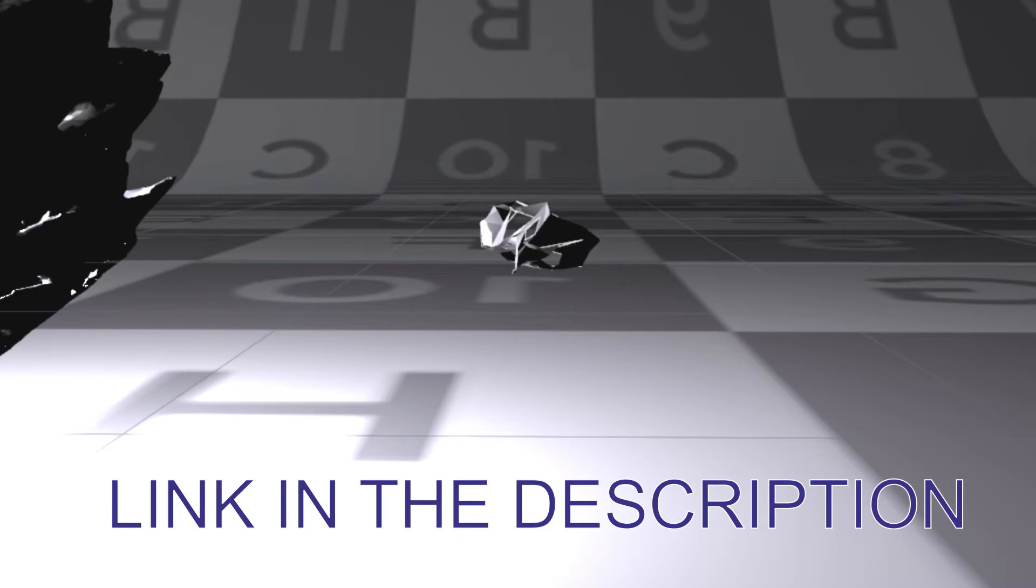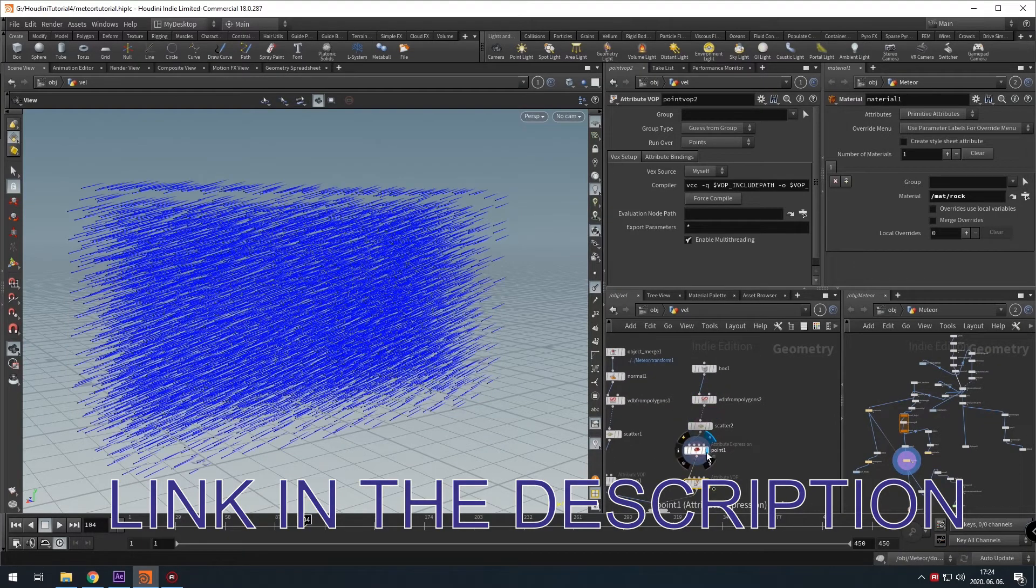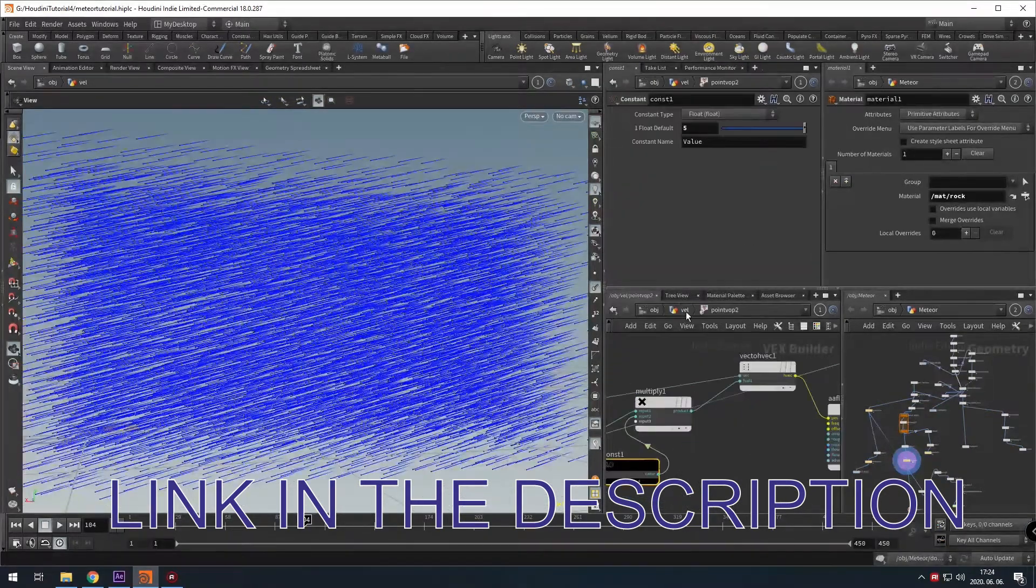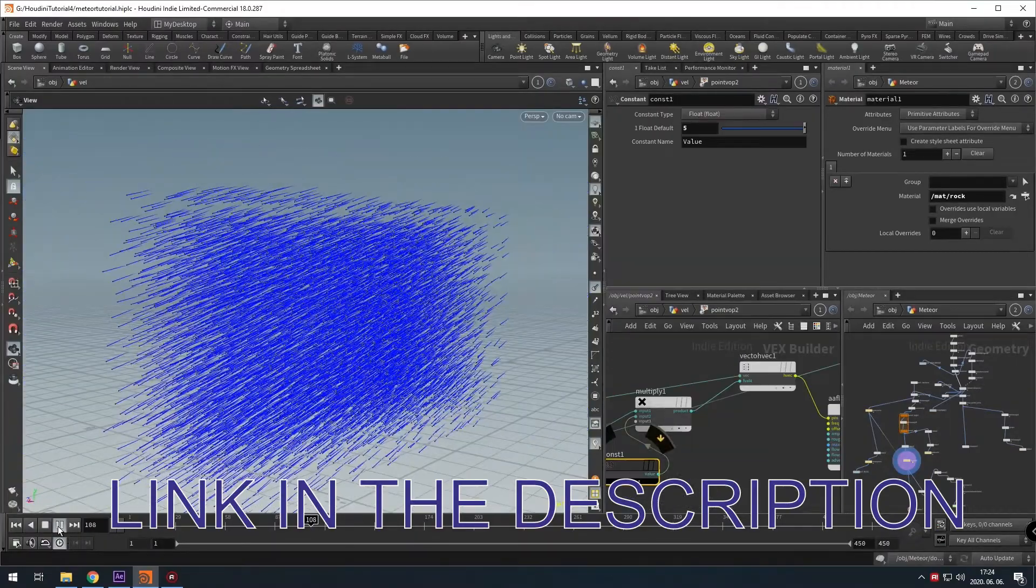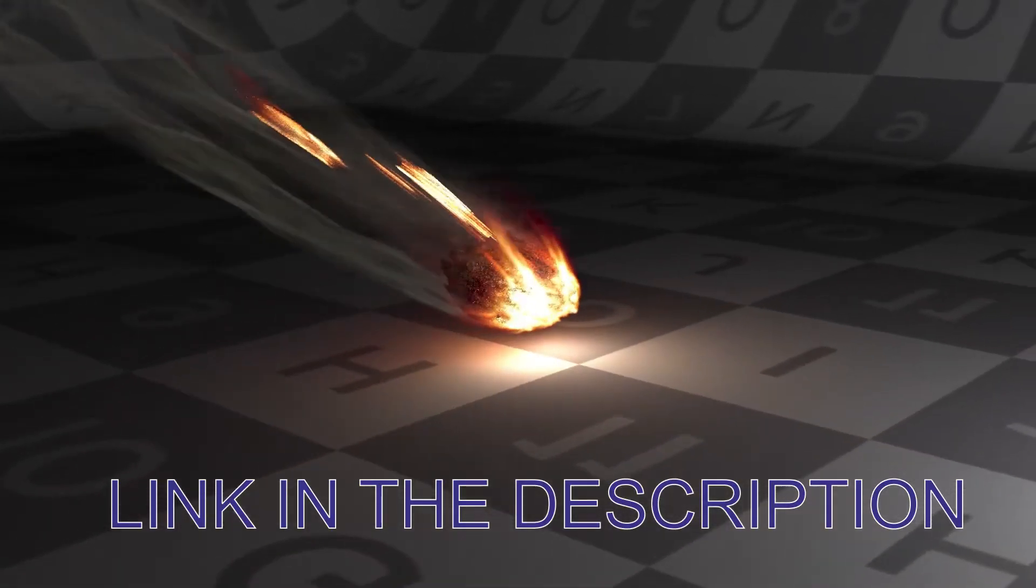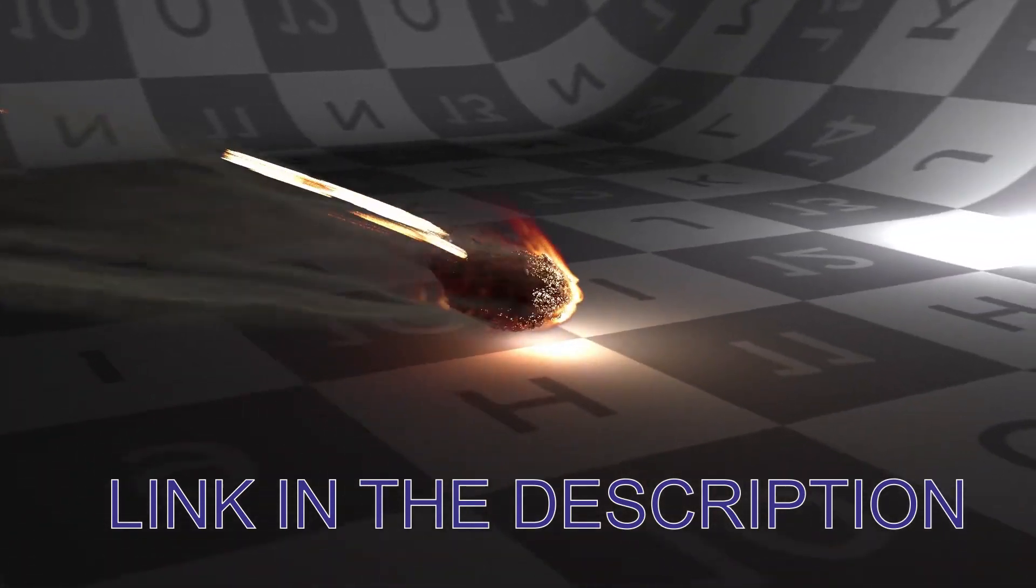Then I set up the particle simulations where the particles will flow along the meteor surface. Then I turn the particle simulation into a volume to get a fiery look.